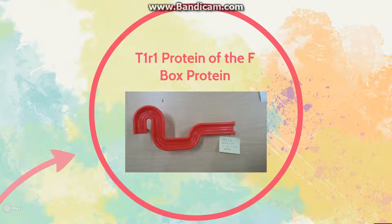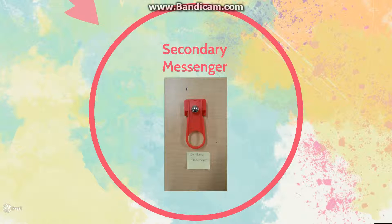Next, the auxin binds to the TIR1 protein of the F-box protein. As the auxin binds to a receptor, it activates a secondary messenger — shown here by the red tub — and it stimulates the production of ATP through proton pumps and turns on the special auxin-regulated genes that produce growth proteins. This process also helps with the growth of the plant.